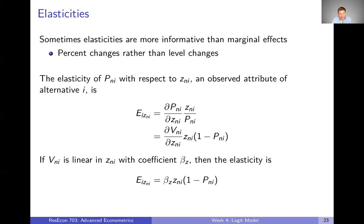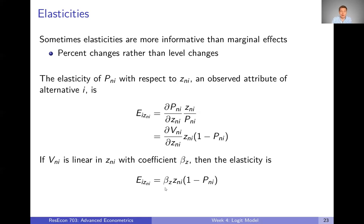Without going through all the math again — if we assume representative utility is linear, then the elasticity of alternative i with respect to some attribute of alternative i, say the elasticity of driving with respect to the cost of driving, equals the parameter on cost times the actual cost data times one minus the choice probability of driving. Our model gives us beta, z is data we already have, and we know how to calculate choice probabilities. So we can put all these pieces together and calculate any elasticity we want depending on our specific context.